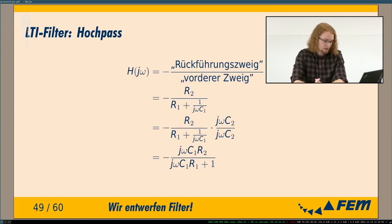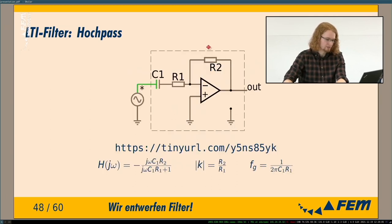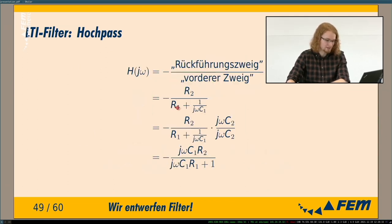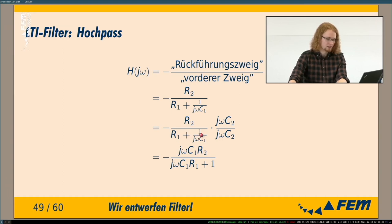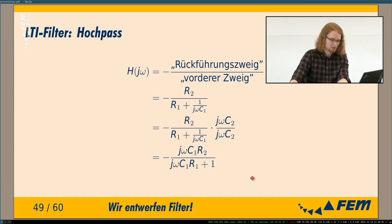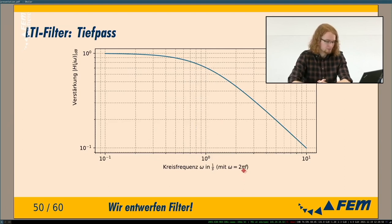To derive the transfer function: with the inverting amplifier topology, you take the feedback branch divided by the input branch. The feedback branch is R2. The input branch is the series circuit R1 + 1/(j·omega·C1). Multiplying through gives us the transfer function formula for the high pass.